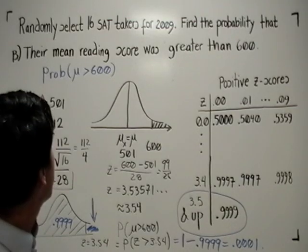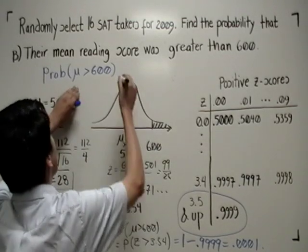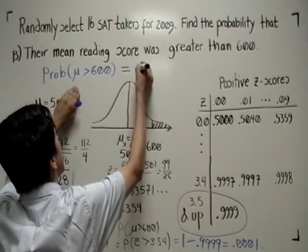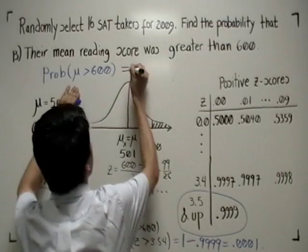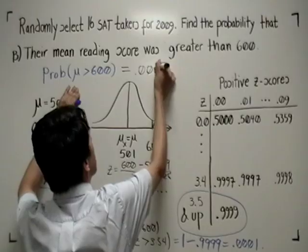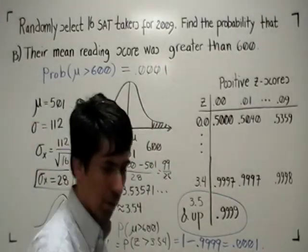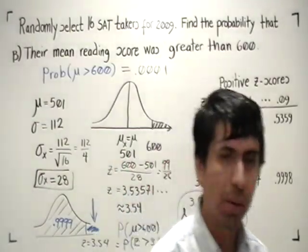So that gives me the answer that I am after. What am I after? The probability that the mean was greater than 600. The result, 0.0001. And that's the end of this example.